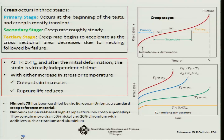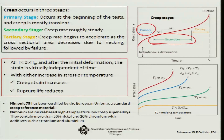Creep generally occurs in three stages. The first is the primary stage, which is of shorter duration and mostly transient. Then there is a longer secondary stage where the creep rate is more or less steady — you get a continuous slope and can predict how much the material will creep in that time period. Then there is a tertiary stage.